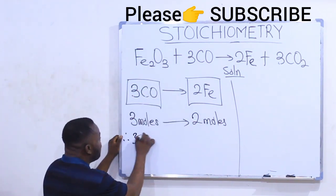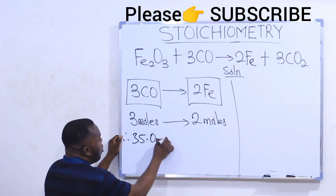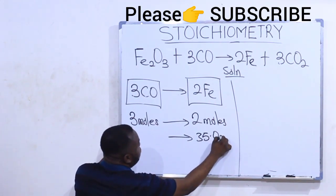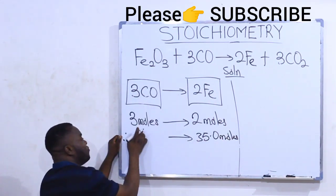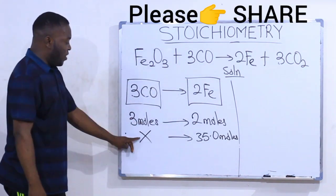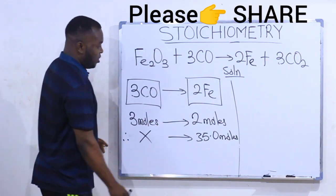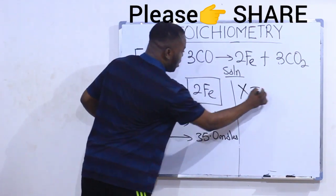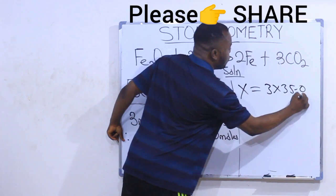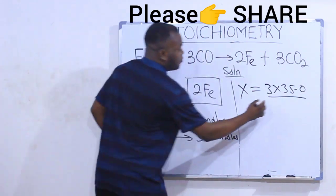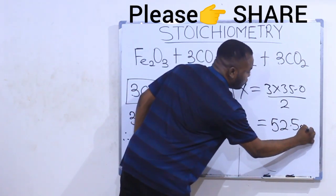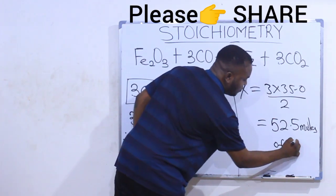Therefore, 35.0 moles of iron will require x moles of CO. I find x by writing: 3 over x equals 2 over 35. Cross-multiplying gives x equals 3 times 35.0 divided by 2.